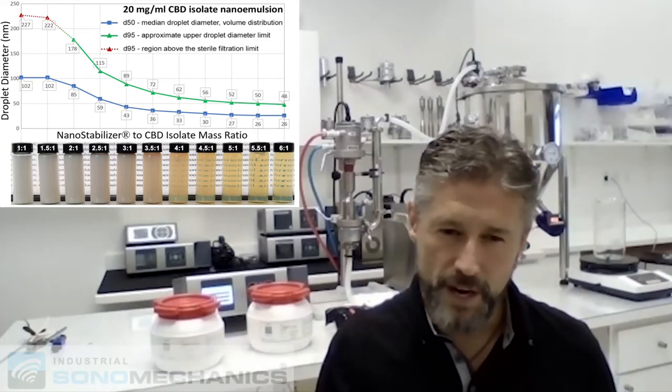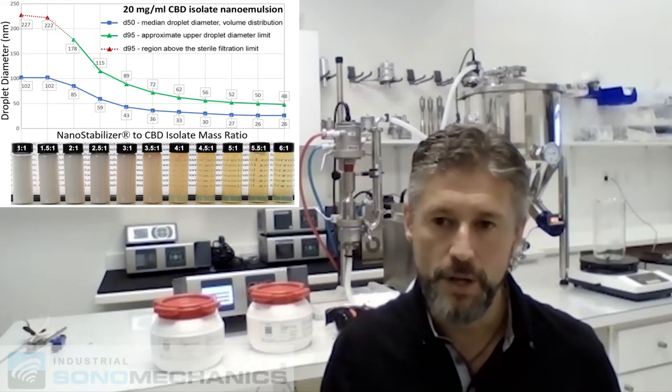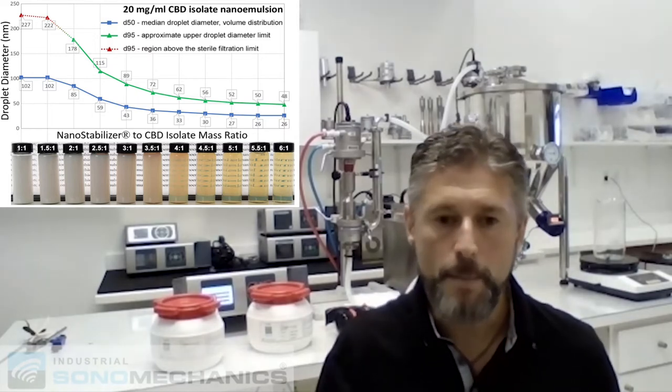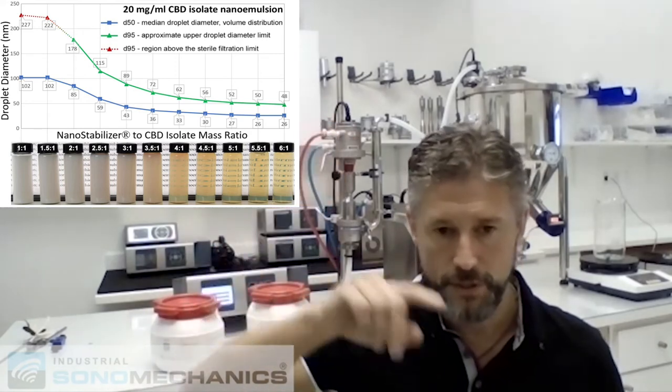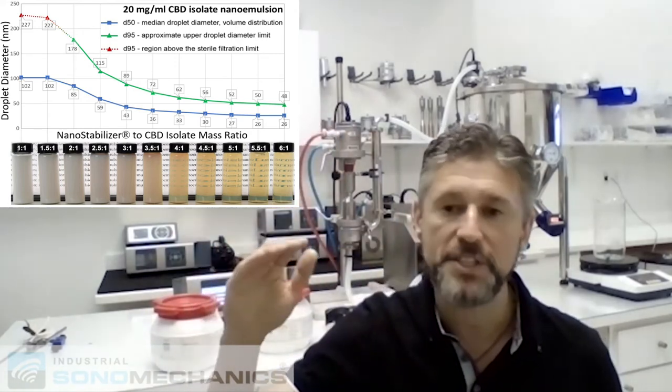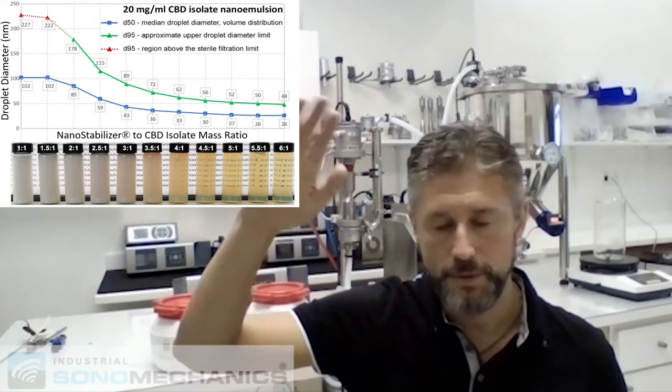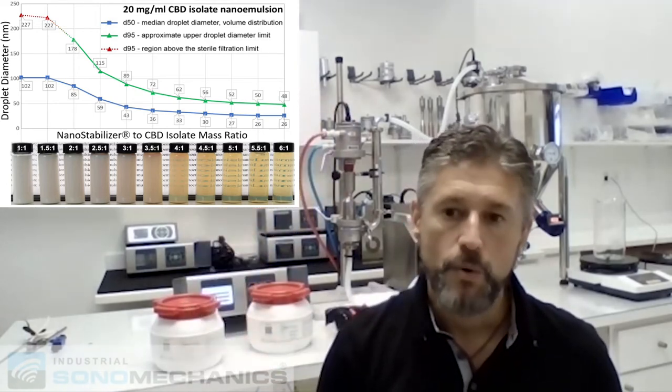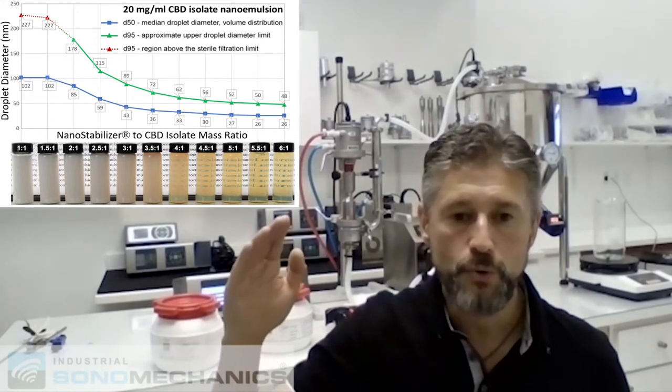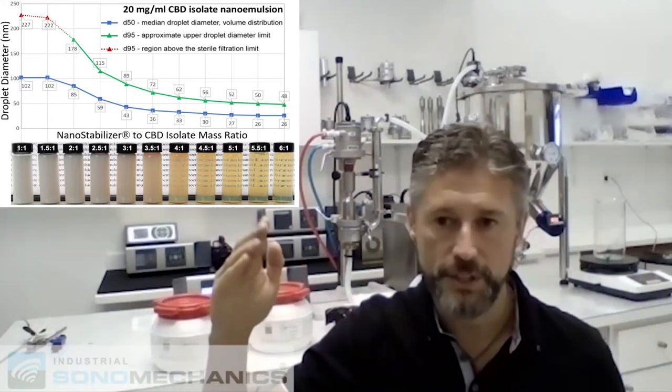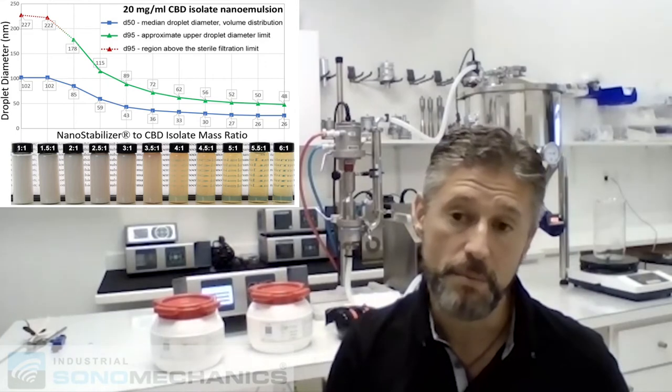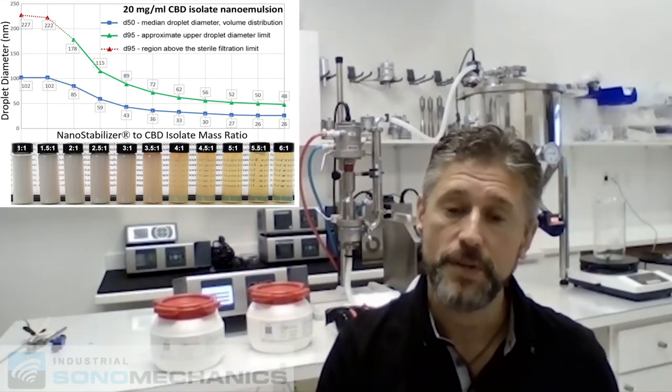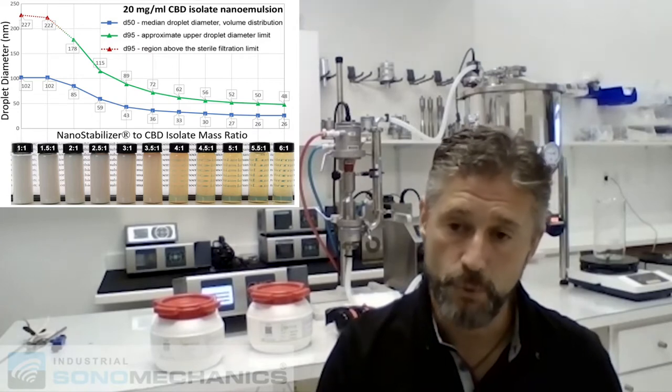And somewhere around two and a half to one or two to one, the translucency is lost. And the upper end of the droplet size distribution, specifically D95, so some of the bigger droplets in your distribution, will get close to 200 nanometers or maybe even start exceeding 200 nanometers, which is a problem because you can't do sterile filtration.